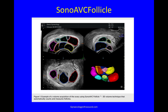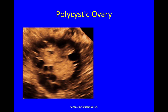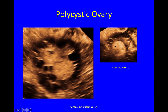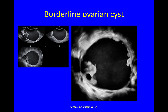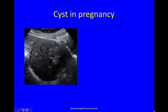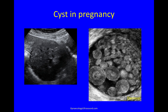3D is useful for antral follicle counting — you can measure and count follicles using SonoAVC technology. This is what a polycystic ovary looks like on 3D ultrasound, with more than 20 follicles visible, giving a diagnosis of polycystic ovary. This is a dermoid in a polycystic ovary. For characterization of adnexal masses 3D is not the primary tool — 2D with the IOTA classification system gives you the answer — but 3D can reveal additional detail, such as in this borderline cyst where a large papillation and widespread wall irregularities are seen. In a case of a cyst in pregnancy, 3D clearly confirmed it to be a dermoid.